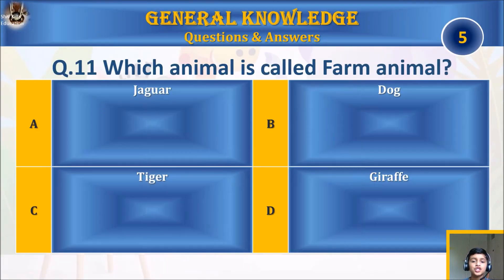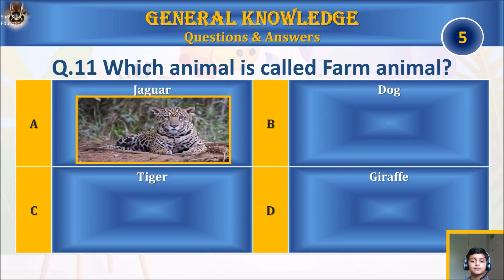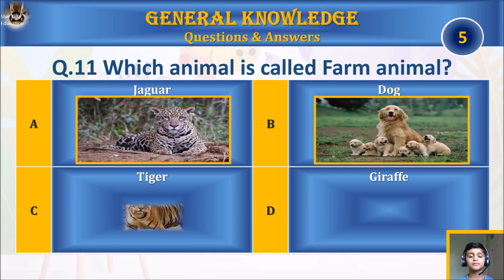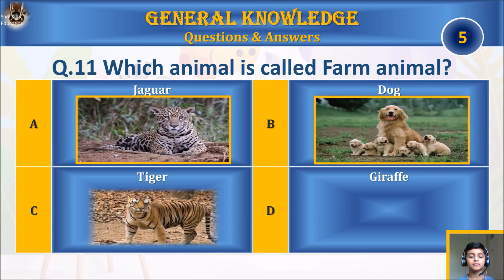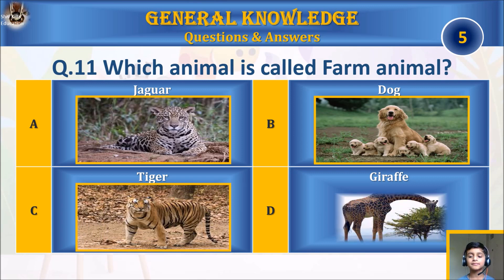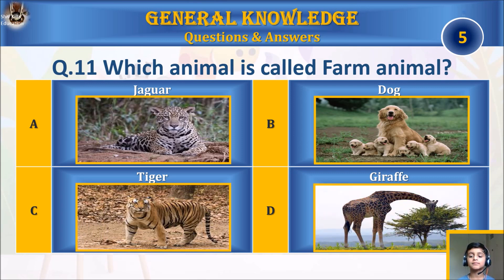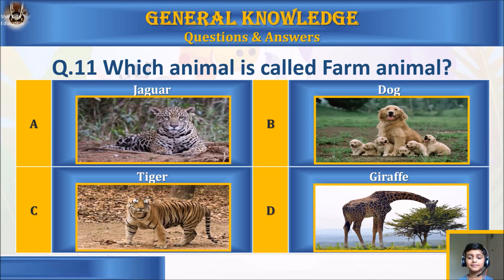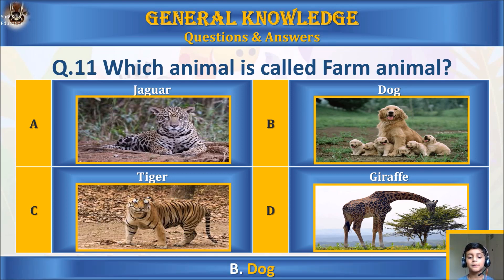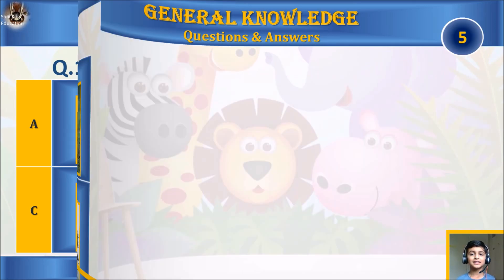Question eleven: which animal is called a farm animal? A) jaguar, B) dog, C) tiger, or D) giraffe? Your time starts. The answer is B) dog.